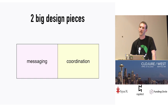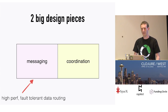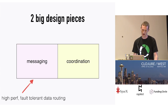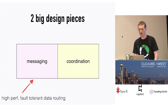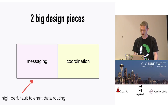When we talk about the design of distributed data processing platforms, in my mind there are two really big pieces: a messaging component and a coordination component. Messaging is all about the high-performance, fault-tolerant routing of data through your cluster — taking data from S3, moving it through your cluster, and putting it on a Kafka topic. That's primarily what's going to change in Onyx 1.0. We're moving to a streaming engine called asynchronous barrier snapshotting, the new algorithm that came out of Flink.